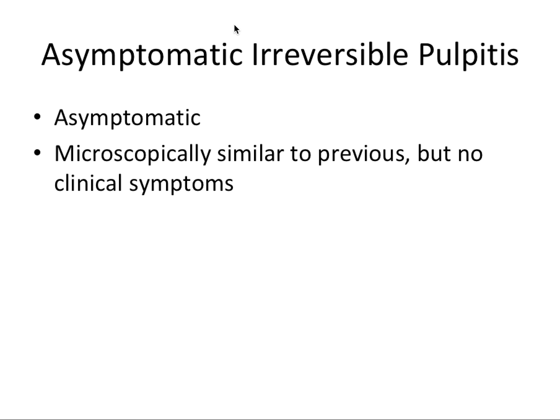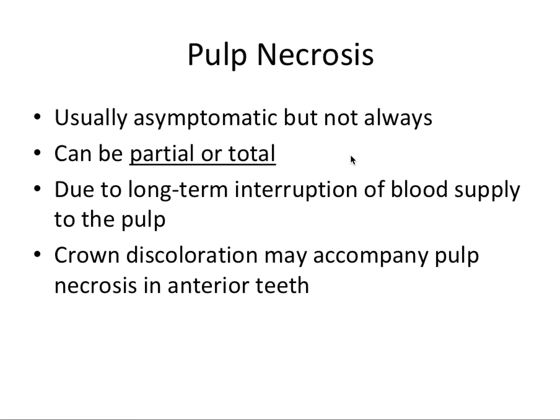Next we have the somewhat strange diagnosis of asymptomatic irreversible pulpitis. The patient is actually asymptomatic — and to clarify, asymptomatic doesn't mean the tooth is numb; it just means the nerves are responding rather normally, almost like a normal pulp in terms of response. But microscopically, histologically, and physiologically, the pulp has been irreversibly damaged and requires treatment. This can be difficult to treat because the patient may feel like nothing is wrong, yet there is irreversible damage. It is microscopically similar to symptomatic irreversible pulpitis, but with no clinical symptoms.